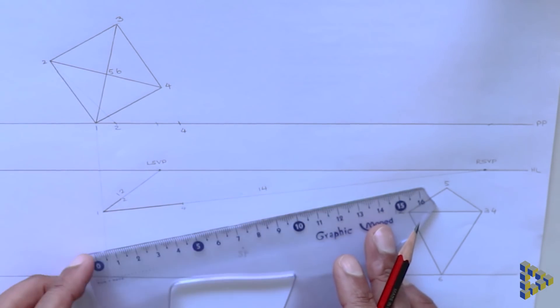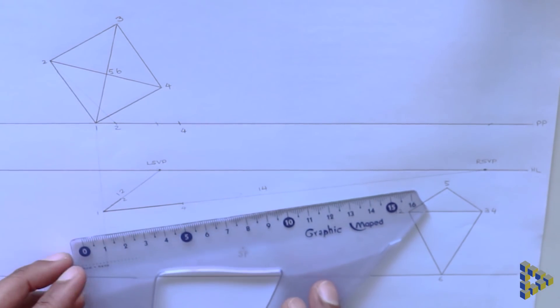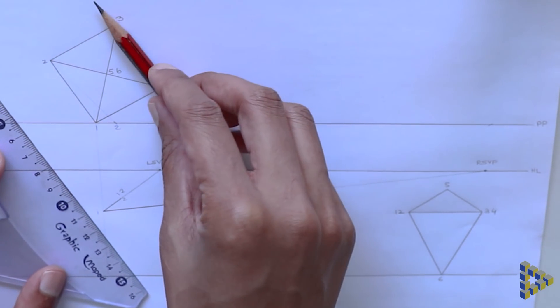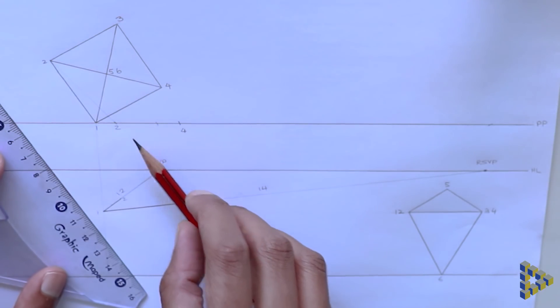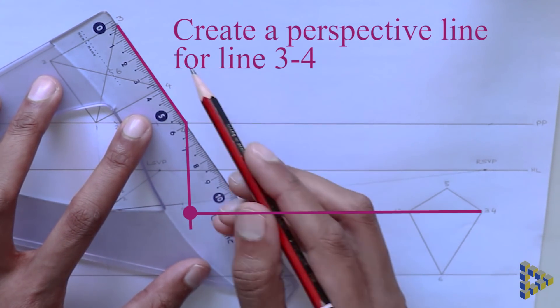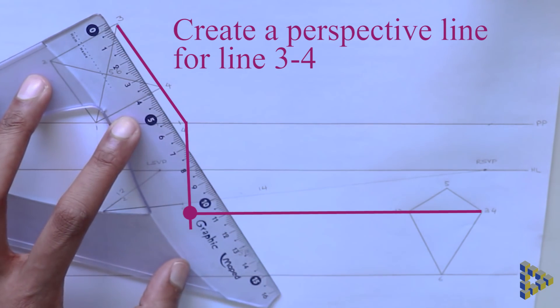Now, we don't have a perspective line for points three, five and six. To get a perspective line for point three, place your set square coincident with the line three, four and where the set square intersects the picture plane is where you make a mark.